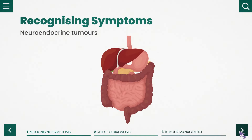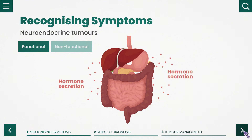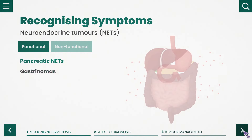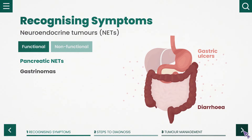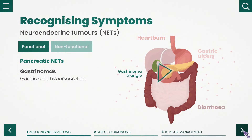Symptoms of NETs depend on whether tumours are functional or non-functional. Functional NETs secrete hormones. Functional pancreatic NETs like gastrinomas cause gastric ulcers, diarrhoea and heartburn due to gastric acid hypersecretion. Gastrinomas are localised in the gastrinoma triangle.